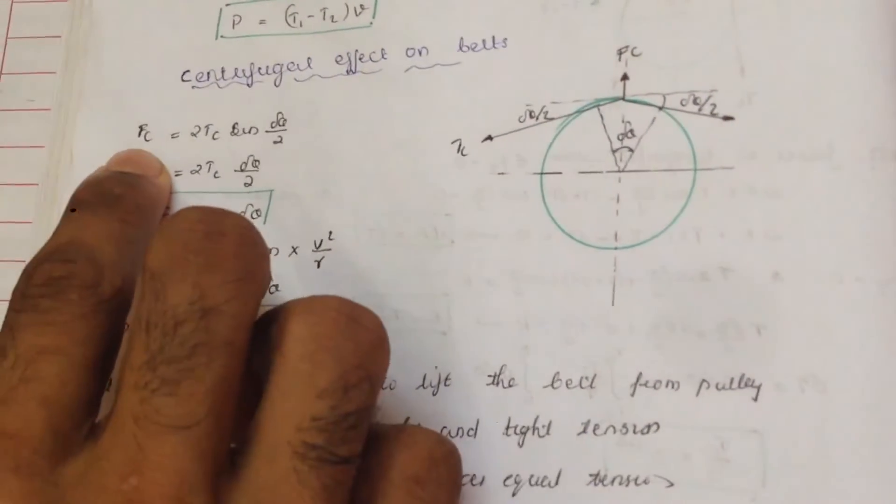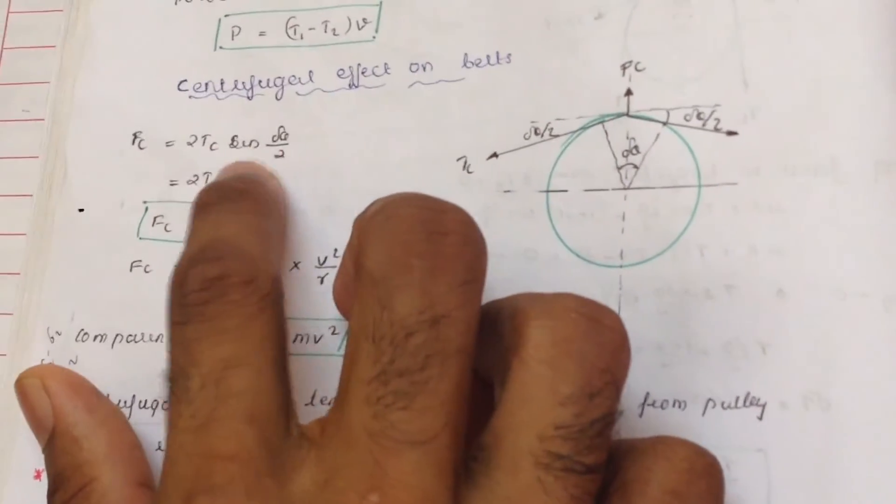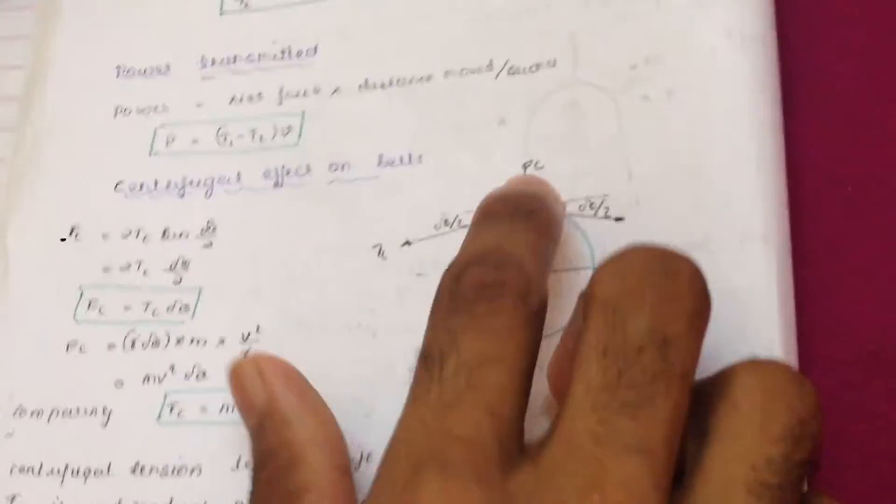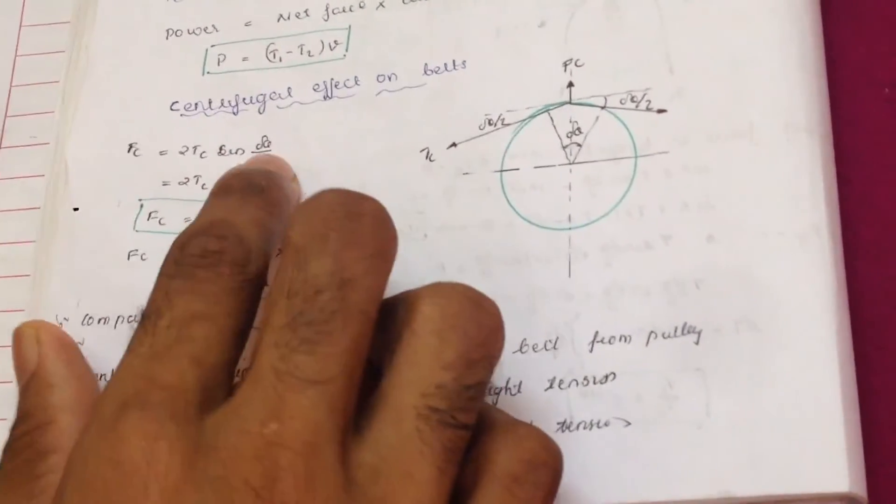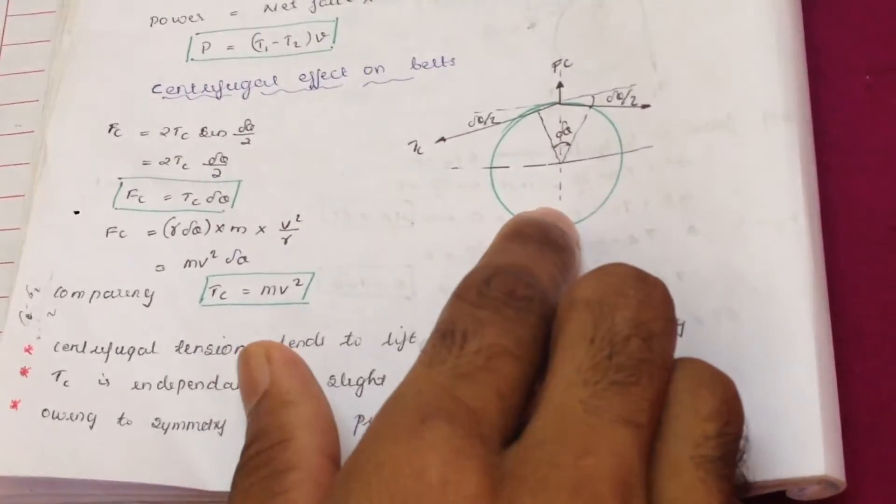So fc is equal to 2 times tc sin dtheta by 2. fc is in upward direction and tc sin dtheta by 2 is in downward direction.